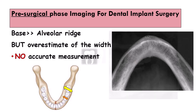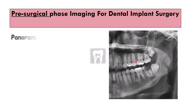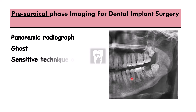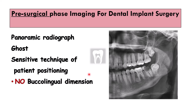What about panoramic radiography? It does cover a bigger field of view — we have the sinus, the nasal floor, the inferior alveolar canal, and we have the mesial-distal and the vertical dimension. However, ghost images that are superimposed and technical sensitivity in patient positioning can cause panoramic errors. It also does not provide any information on the buccal-lingual dimension. All of this can be a disadvantage of this technique for dental implants.